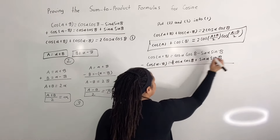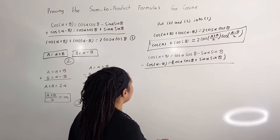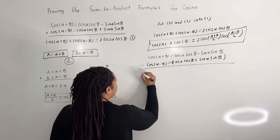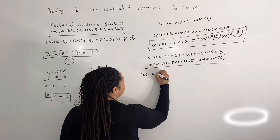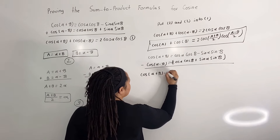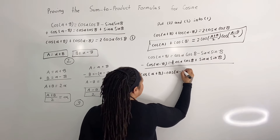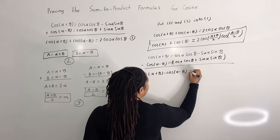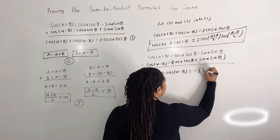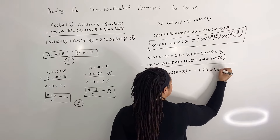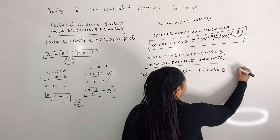And I'm going to call this equation: cosine of alpha plus beta minus cosine of alpha minus beta is equal to negative 2 sine of alpha sine of beta. And I'm going to call this equation 4.